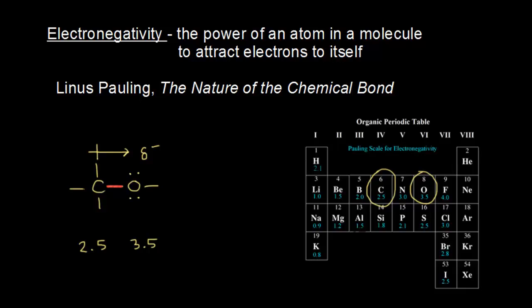Carbon is losing some of those electrons — losing a little bit of electron density and negative charge. Carbon used to be neutral, but since it's losing a little bit of negative charge, it ends up partially positive. So carbon is partially positive and oxygen is partially negative. That's a polarized covalent bond due to the differences in electronegativities between those two atoms.